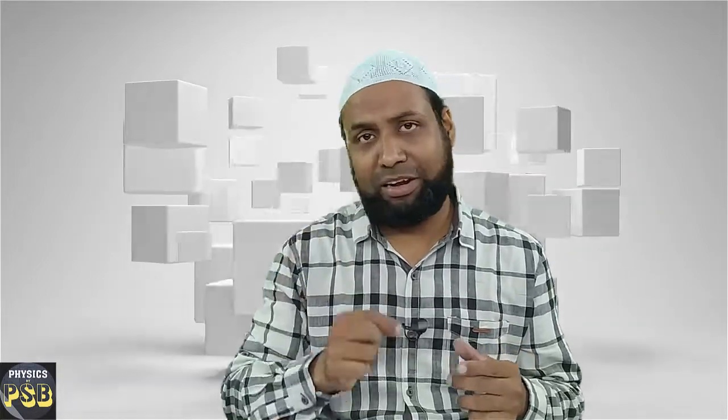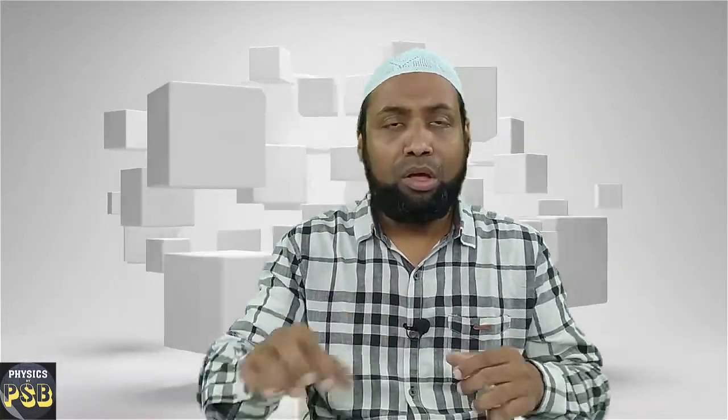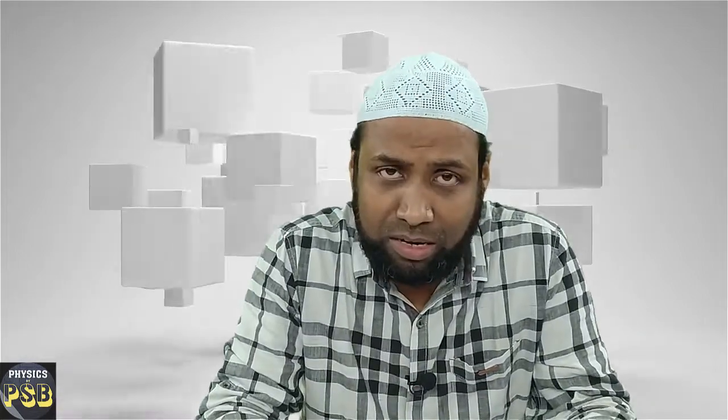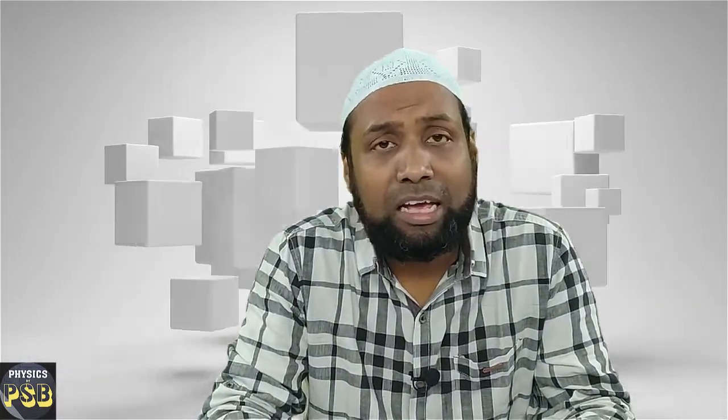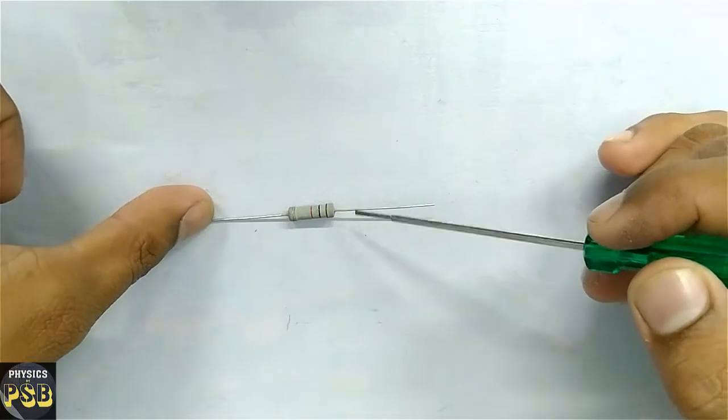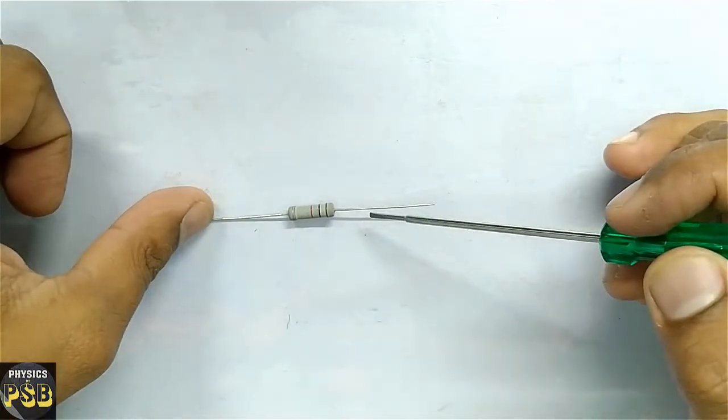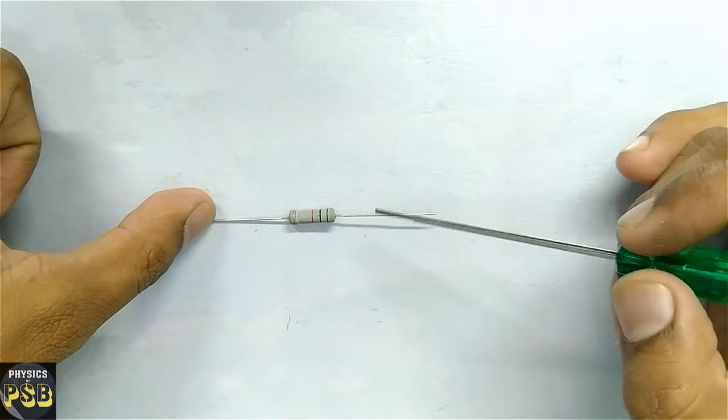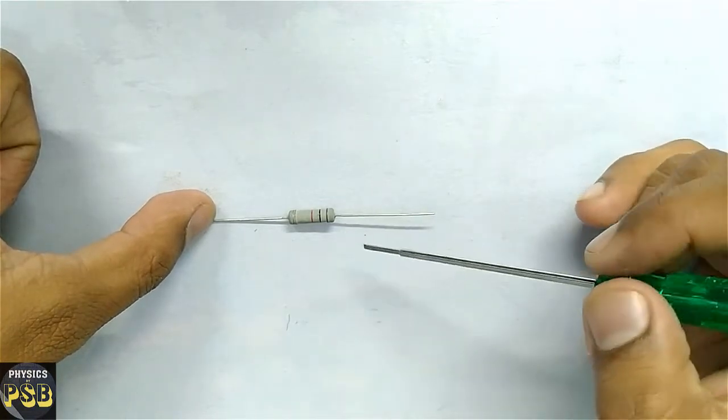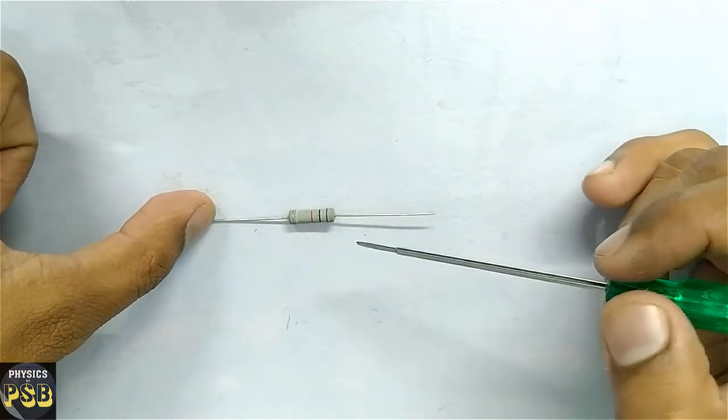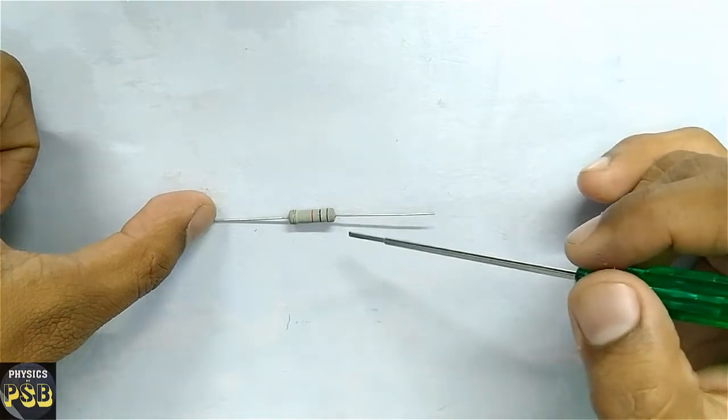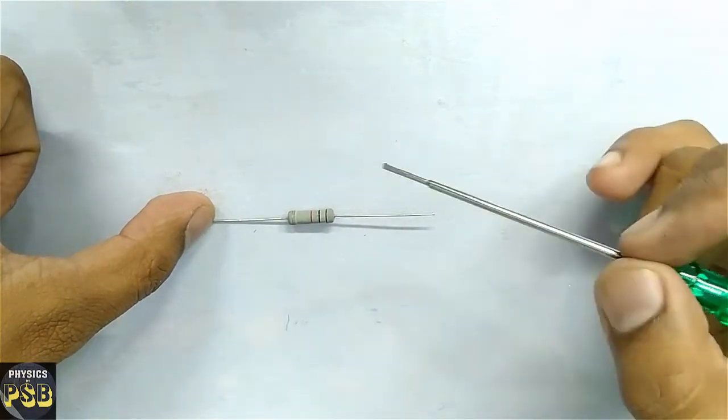This device is known as a carbon resistor. It consists of a ceramic core on which a thin layer of crystalline carbon is deposited. The thickness of the carbon layer decides the resistance offered by this resistor.